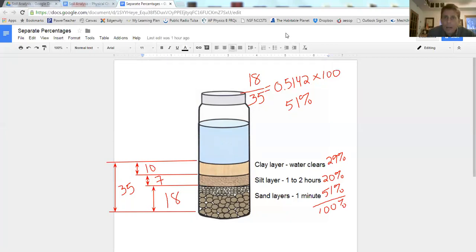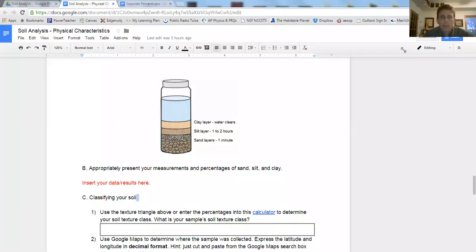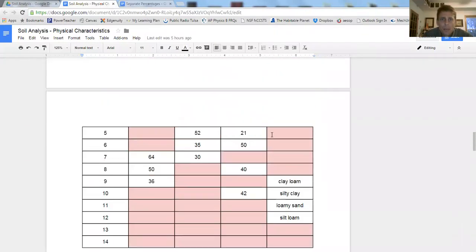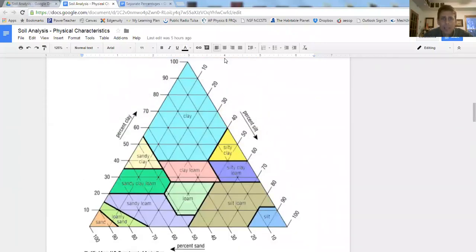So now, what we want to do is go back to our worksheet. Let's go up to the triangle because you need to be able to use the triangle on the actual AP exam. You can't just rely on a calculator or something like that.